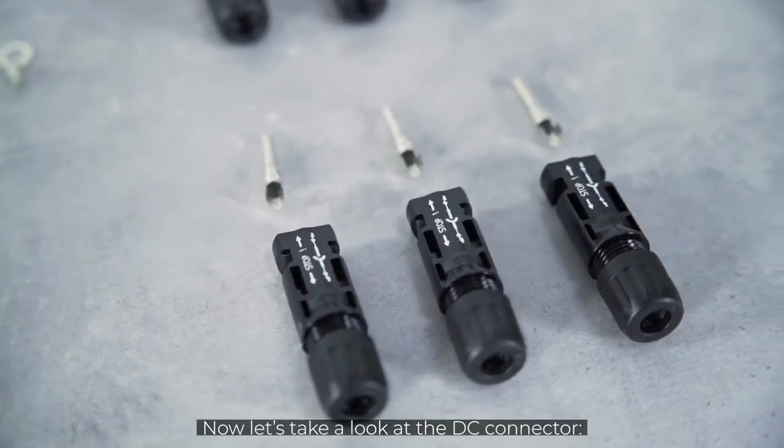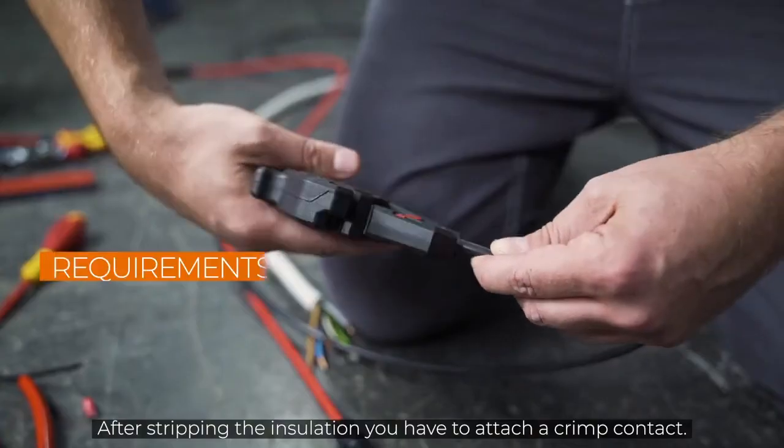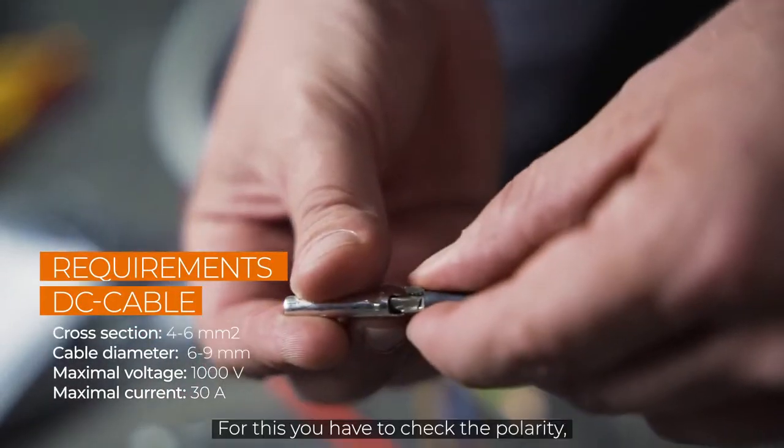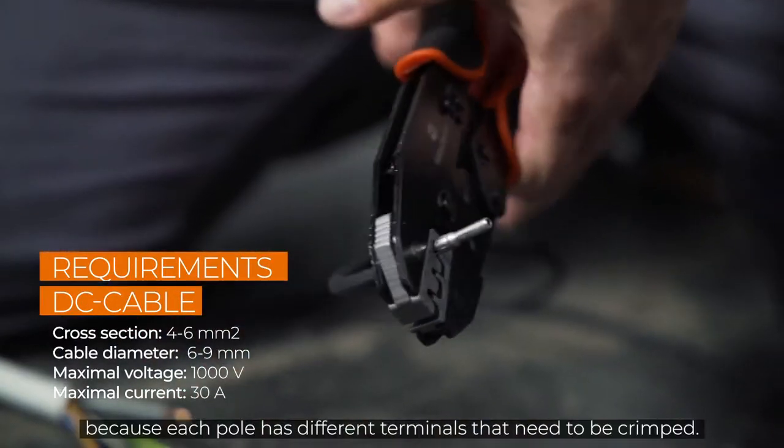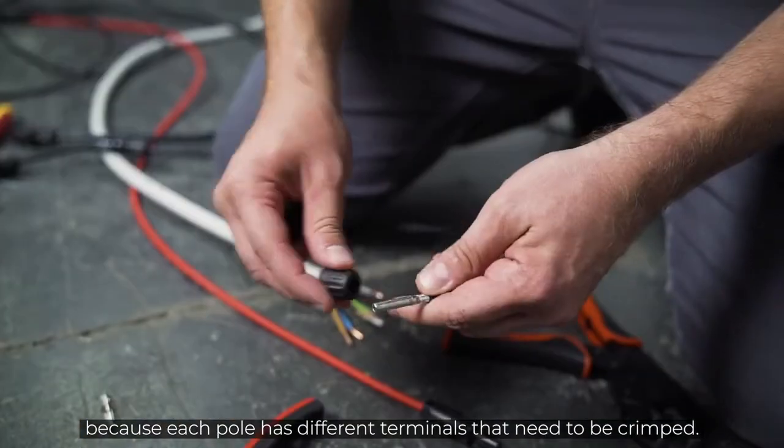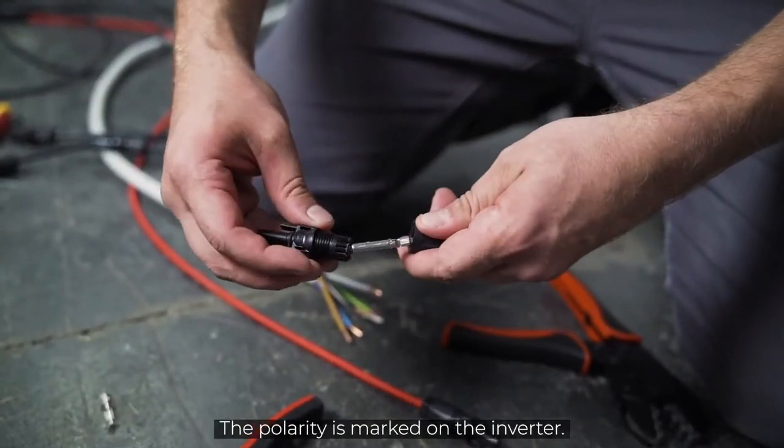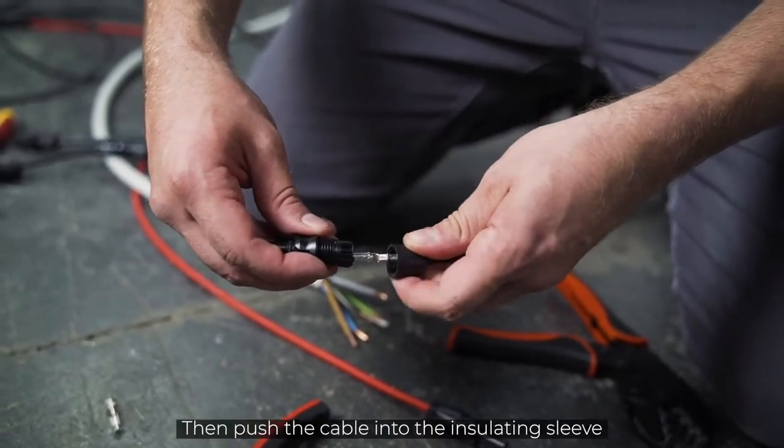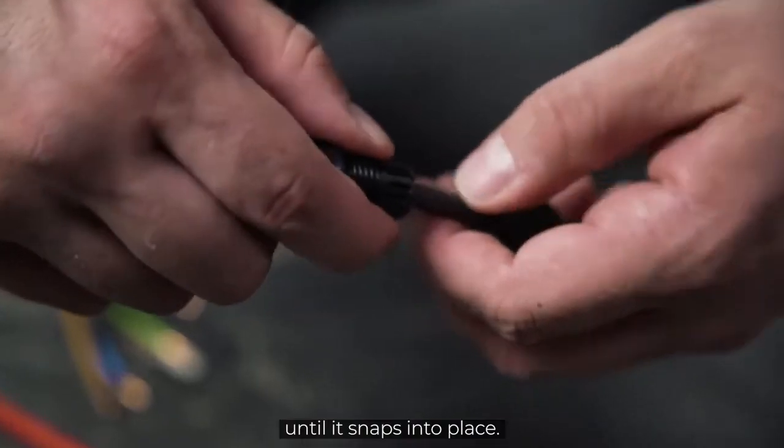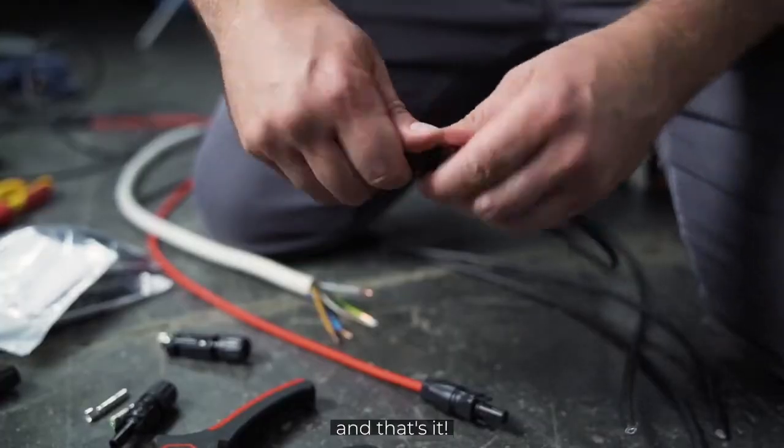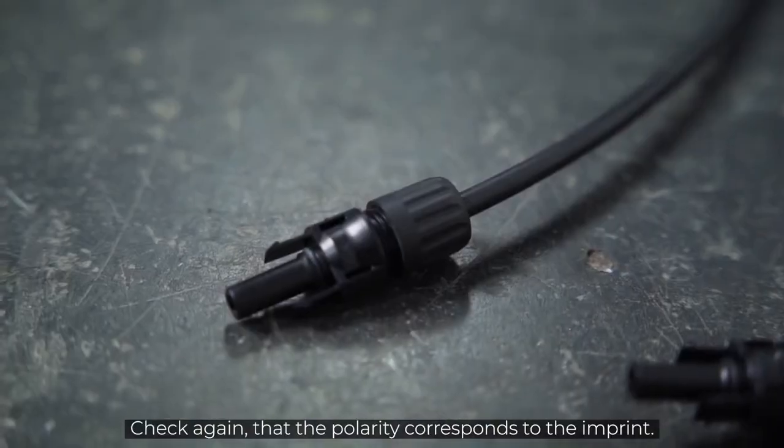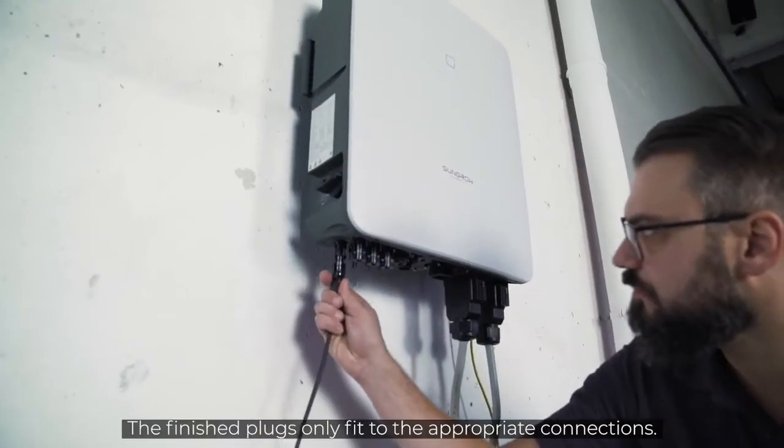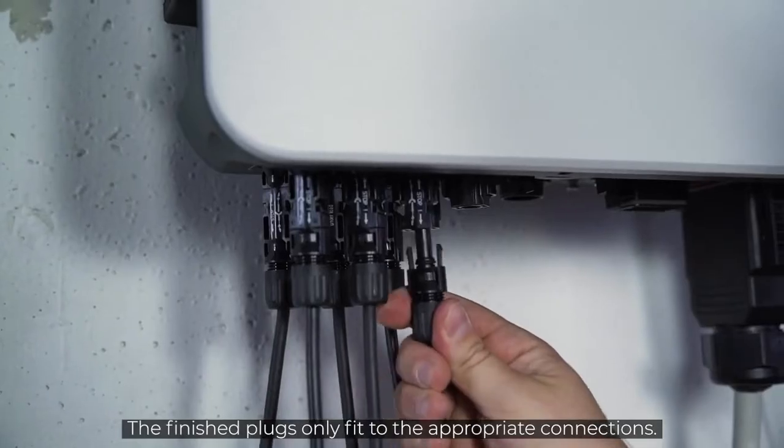Now let's take a look at the DC connector. After stripping the insulation, you have to attach a crimp contact. For this, you have to check the polarity because each pole has different terminals that need to be crimped. The polarity is marked on the inverter. Then push the cable into the insulating sleeve until it snaps into place. Screw it and that's it. Check again that the polarity corresponds to the imprint. The finished plugs only fit to the appropriate connections.